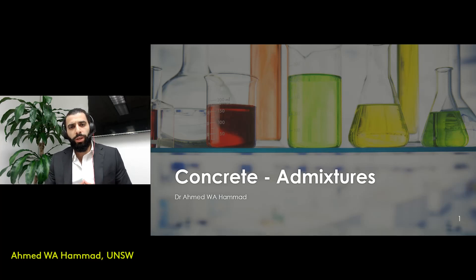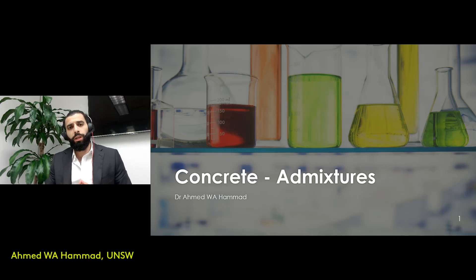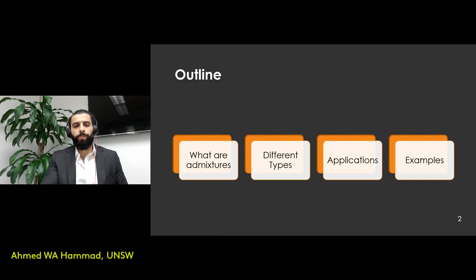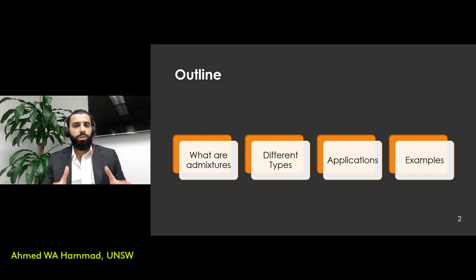There are situations where we need to alter certain characteristics of our concrete mix. To do so we have to add certain chemicals, and these chemicals are referred to as admixtures. The purpose of this video is to go through the various types of admixtures and their uses, covering what admixtures are, the types available, their applications, and some examples of where they have been applied.